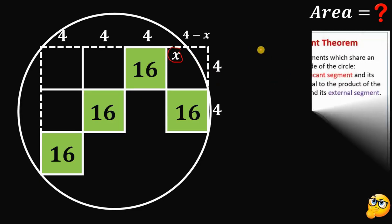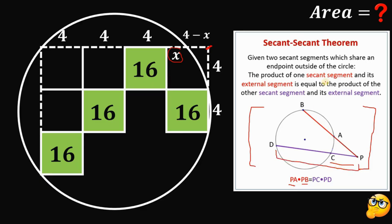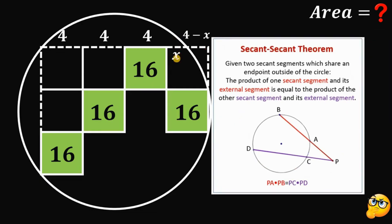To do that, we will use the secant-secant power theorem. It states that given two secant segments which share an endpoint outside the circle, the product of one secant segment and its external segment is equal to the product of the other secant segment and its external segment. So given this figure, PA multiplied by PB must be equal to PC multiplied by PD.